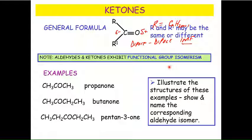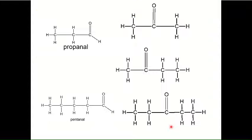So here I've given you a little task to illustrate the structure - the full structure of these examples - and I've asked you to show the name of the corresponding aldehyde isomer. Every single ketone has a corresponding aldehyde isomer. Again, stop the video, go and try that on a piece of paper, and then come back in a few seconds and check yourself. I'm just going to keep plowing on, assuming that you've been very obedient and you've stopped it and gone and done it, and now you are back.